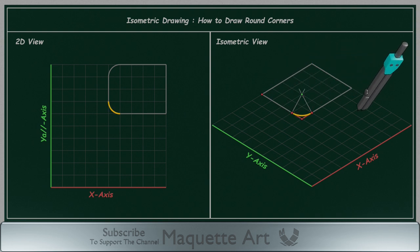For the second corner the method is exactly the same. Measure 1 cm on both axes. Draw the perpendicular lines at those two points. Now draw the arc.